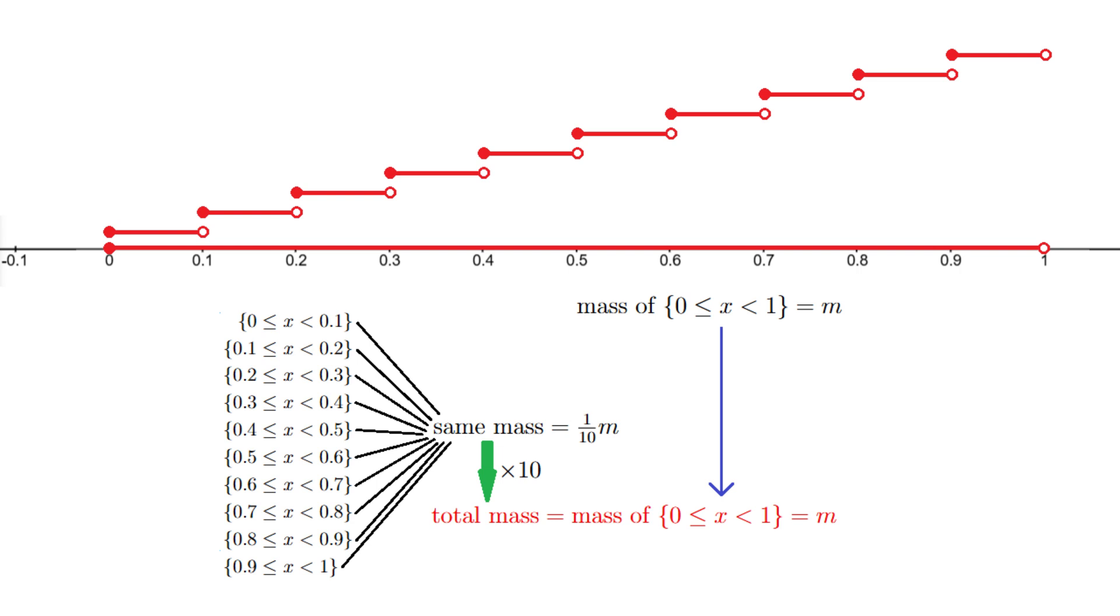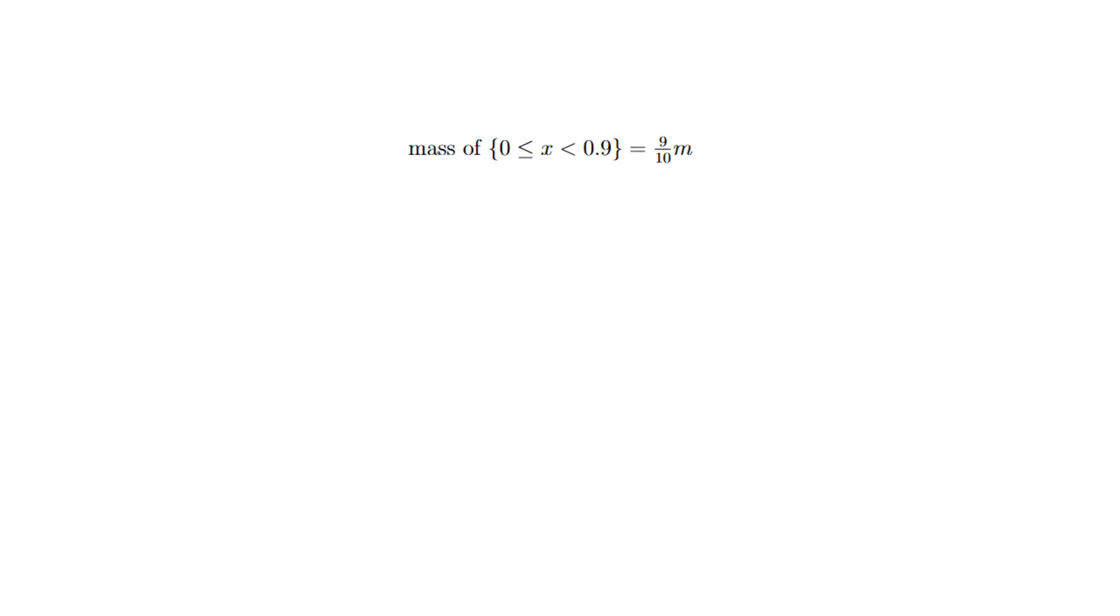And now if we consider the stretch of the number line constituted by the first 9 of these 10 pieces, that will be the stretch going from 0 inclusive up to 0.9 exclusive, and its mass will be equal to the total mass of those 9 pieces, which comes to 9 tenths times m.